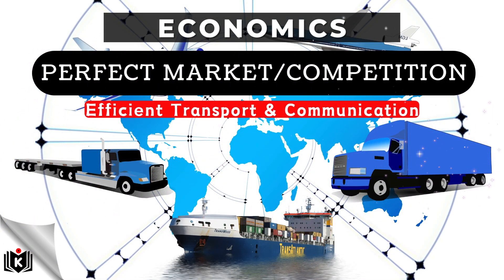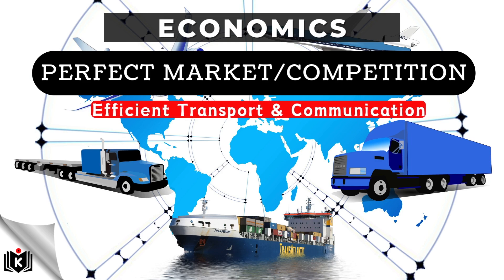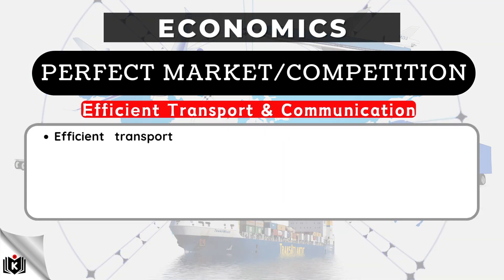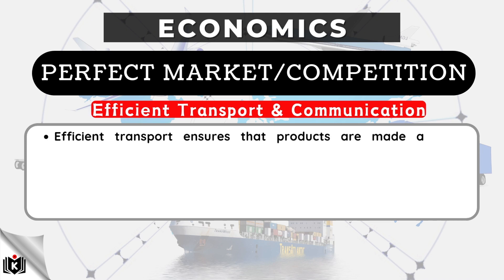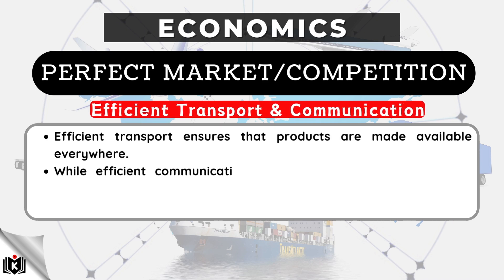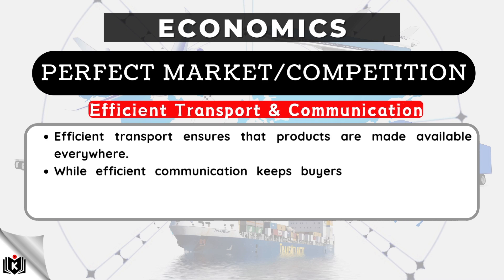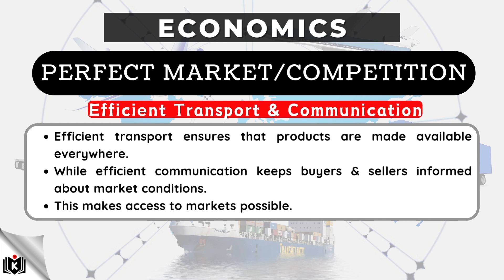In a perfect market, there is also efficient transport and communication. Efficient transport ensures that products are made available everywhere, while efficient communication keeps buyers and sellers informed about market conditions. This makes access to markets possible.